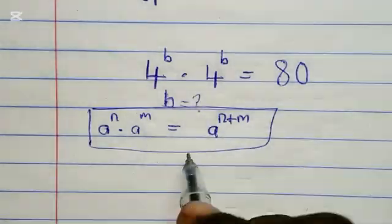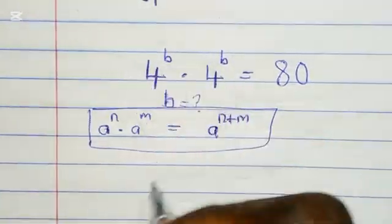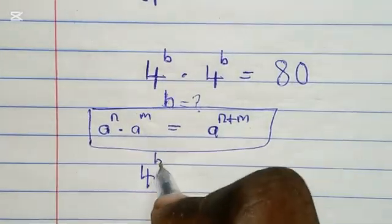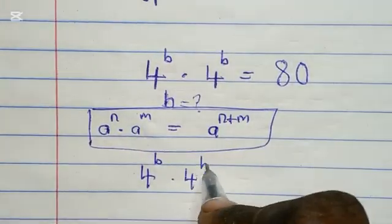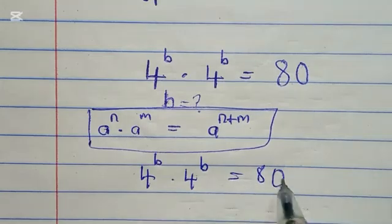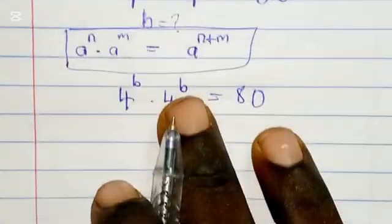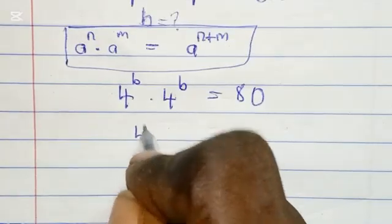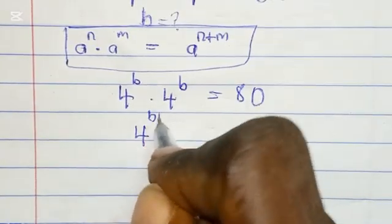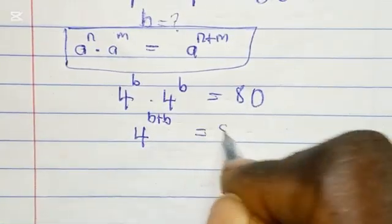Using this property we can say that 4^b times 4^b is equal to 80. Next step, we have 4^(b+b) = 80, so we have 4^(2b) = 80.